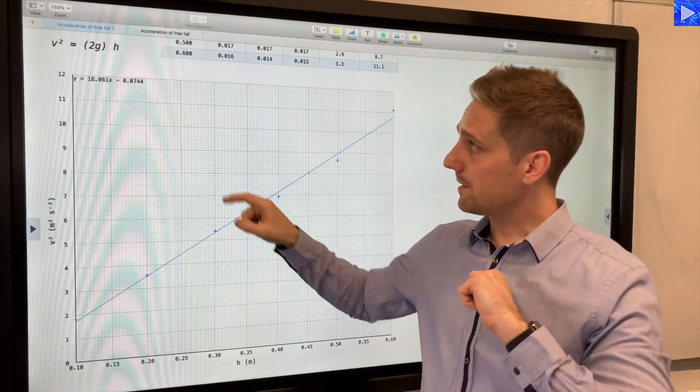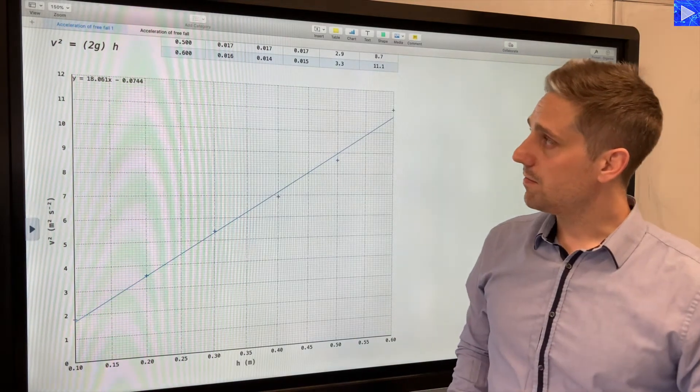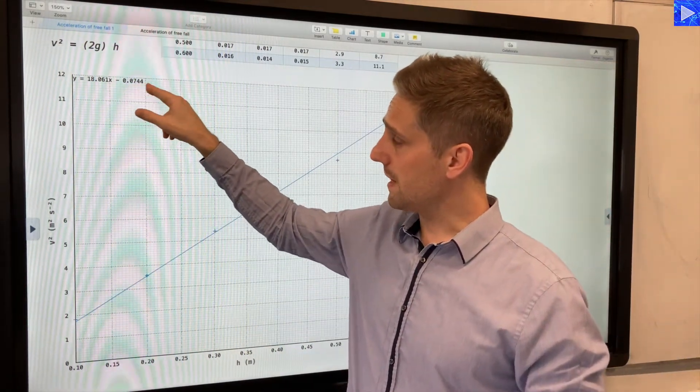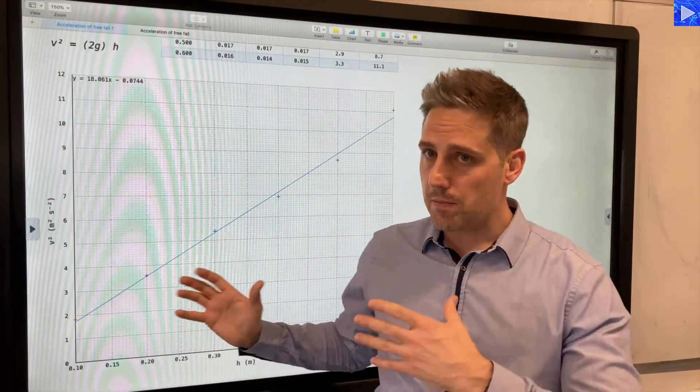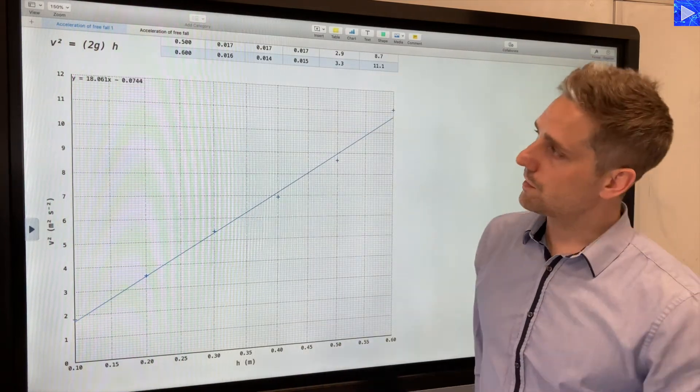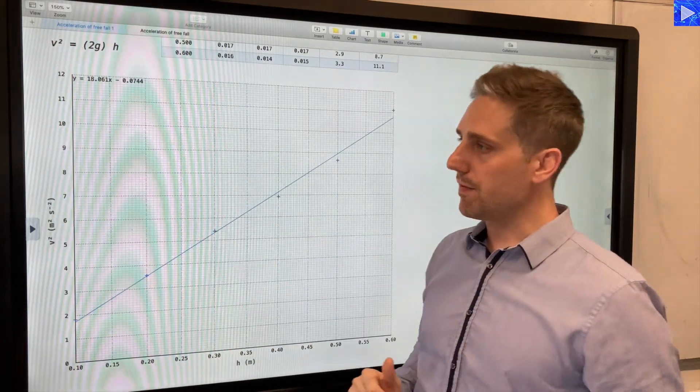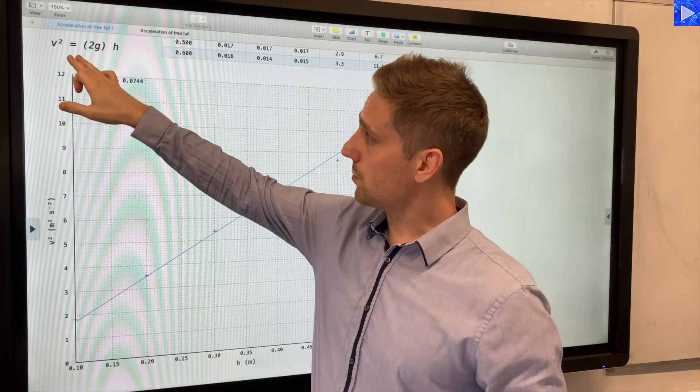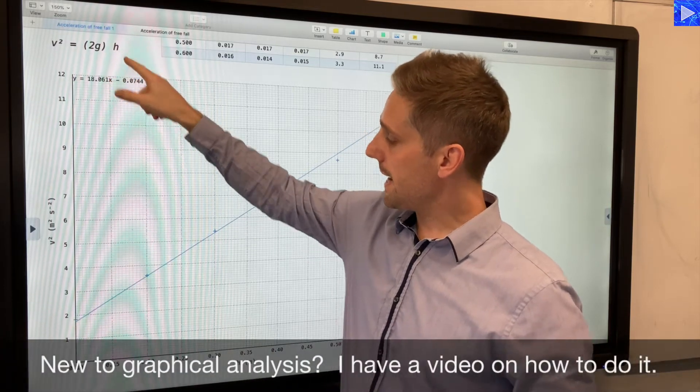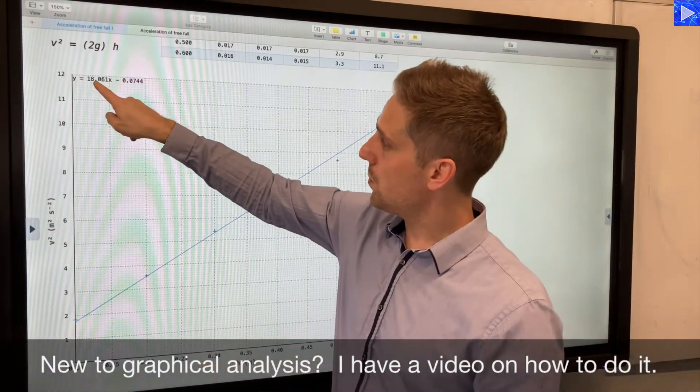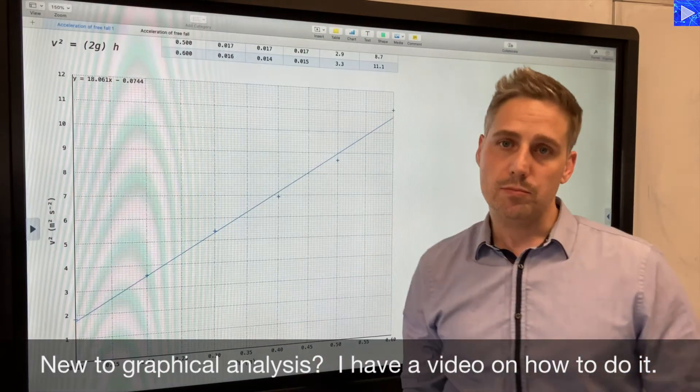We've assumed with this equation that it goes to the origin, so there is no +c value here. You can see that actually there is a non-zero y-intercept for our data, suggesting some errors there, some sources of uncertainty. But we won't worry about that just for now. If we compare this equation with y = mx + c, the gradient here is 18.061. h is plotted on the x-axis. So 18.061 is multiplied by the x variable. That means 2g = 18.061.